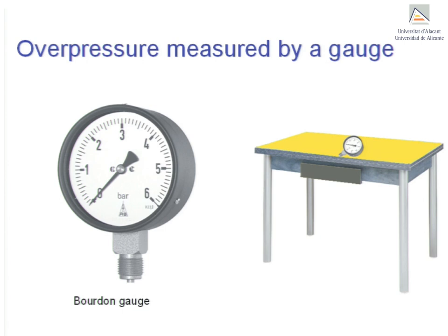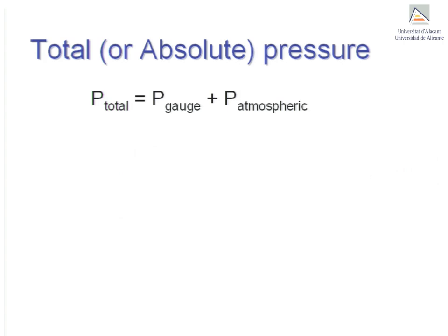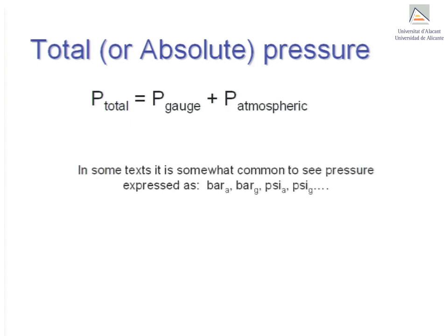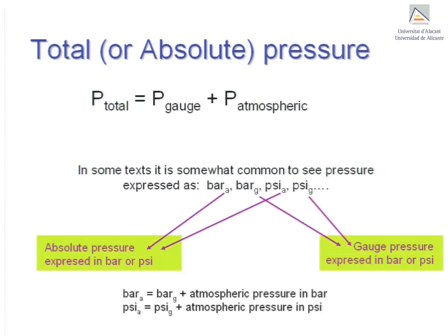For this reason, we also have the concept of absolute or total pressure, which exists to take into account atmospheric pressure. It is somewhat common to find pressure expressed as bar sub A, bar sub G, psi sub A, or psi sub G in some texts. The subscript A is for absolute and the subscript G is for gauge, thus indicating absolute pressure or gauge pressure.